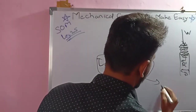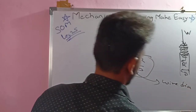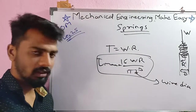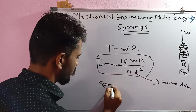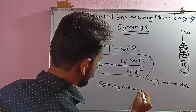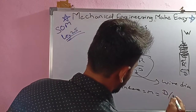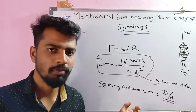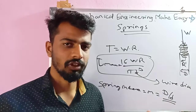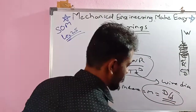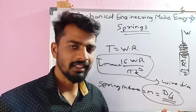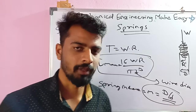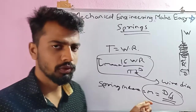The spring index, denoted C, equals capital D (coil diameter) divided by small d (wire diameter). This is the spring index. It is important for tricky questions in exams like GATE — they may ask you to calculate the spring index, or give you the spring index and ask you to find the coil or wire diameter. Note down this formula.